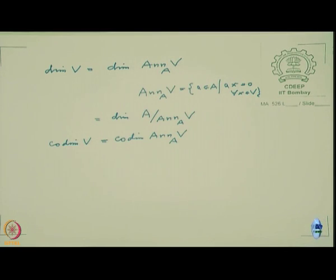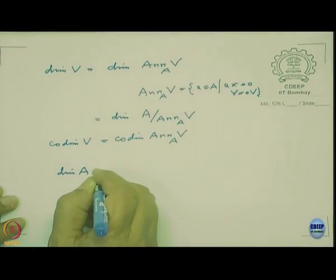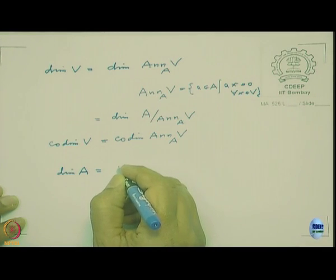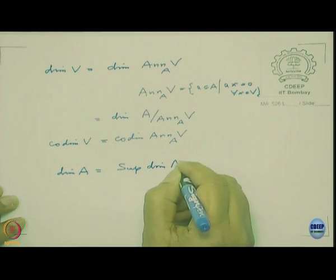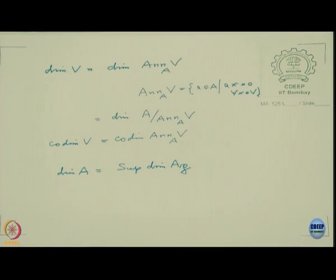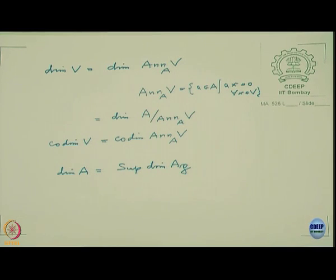One of the most important properties of dimension, as known from topology and geometry, is that it is local. In algebraic terms, the dimension of A equals the dimension of A localized at P. When I have a topology on Spec A, I will explain why this is the same as the earlier definition.